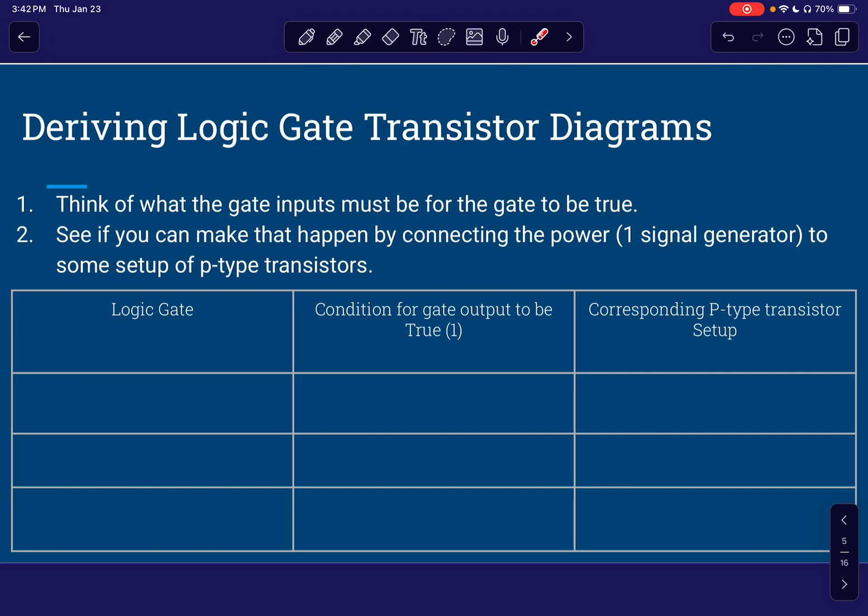All right. So here comes the part that I think a lot of people get confused on, which is actually deriving a logic gate. Like, how do you make the transistor diagram for a given logic gate? And in my mind, I like to think of it as this sort of two parts process. The first one is I like to imagine what the gate is and then think about what the gate inputs must be for that gate to be true. And then once I have that, I got that expression in my mind. I like to see if I can make that happen by connecting the power, which is remember our generator of ones, which represents true to some setup of P type transistors. And remember P type because it connects to power.